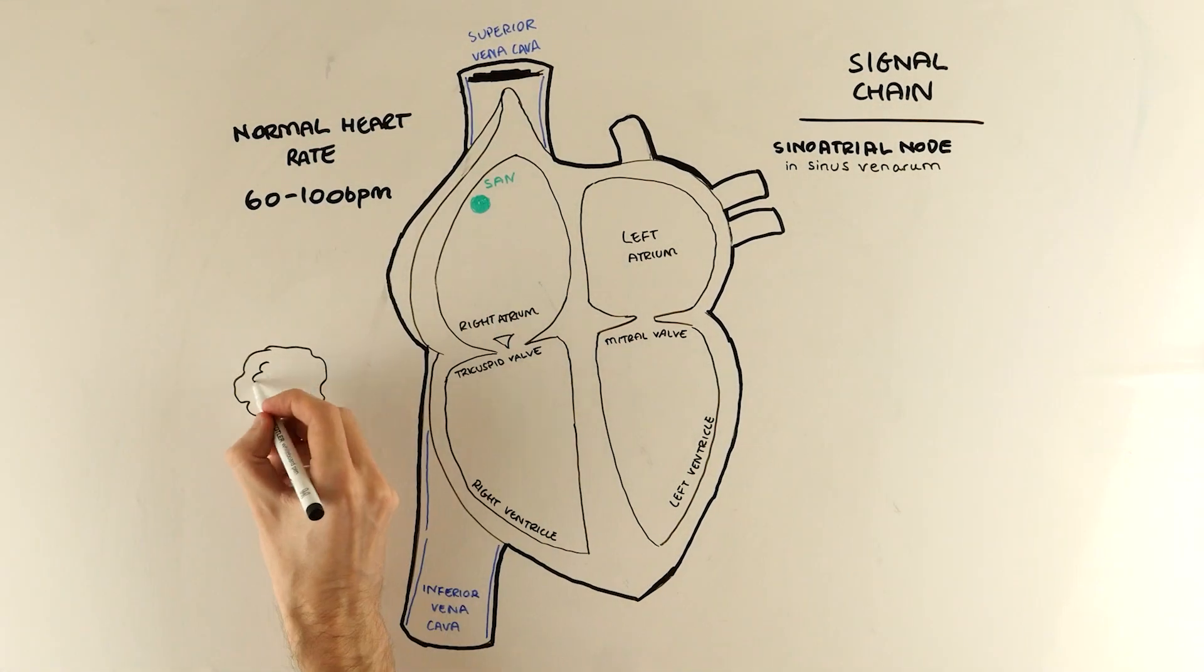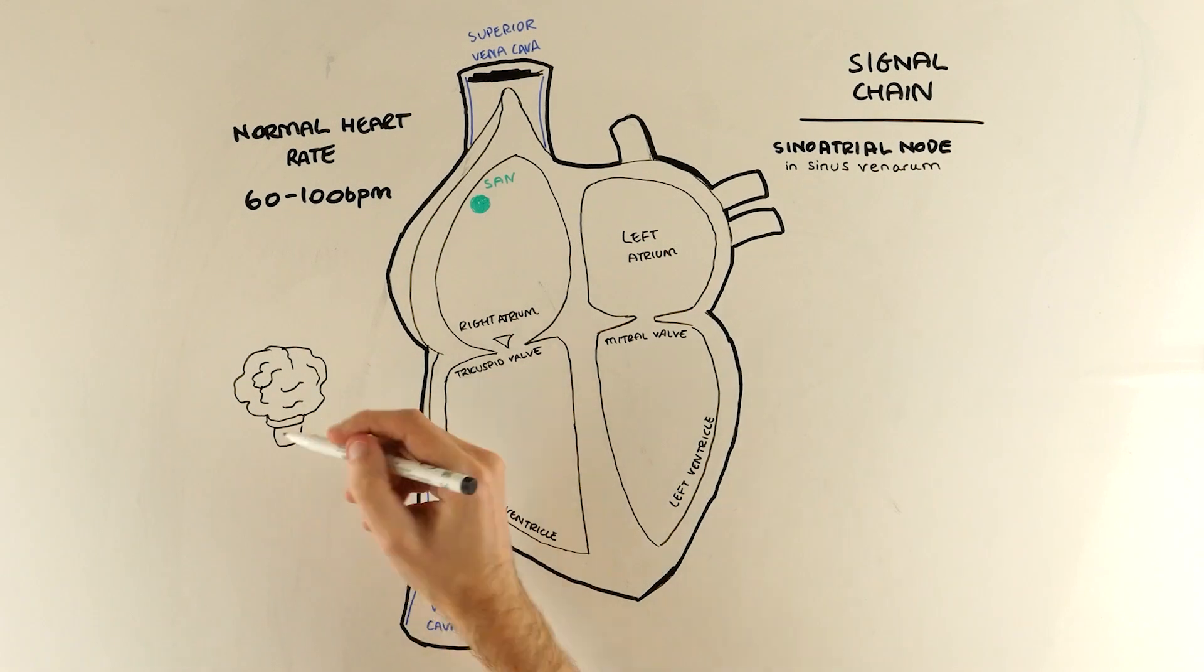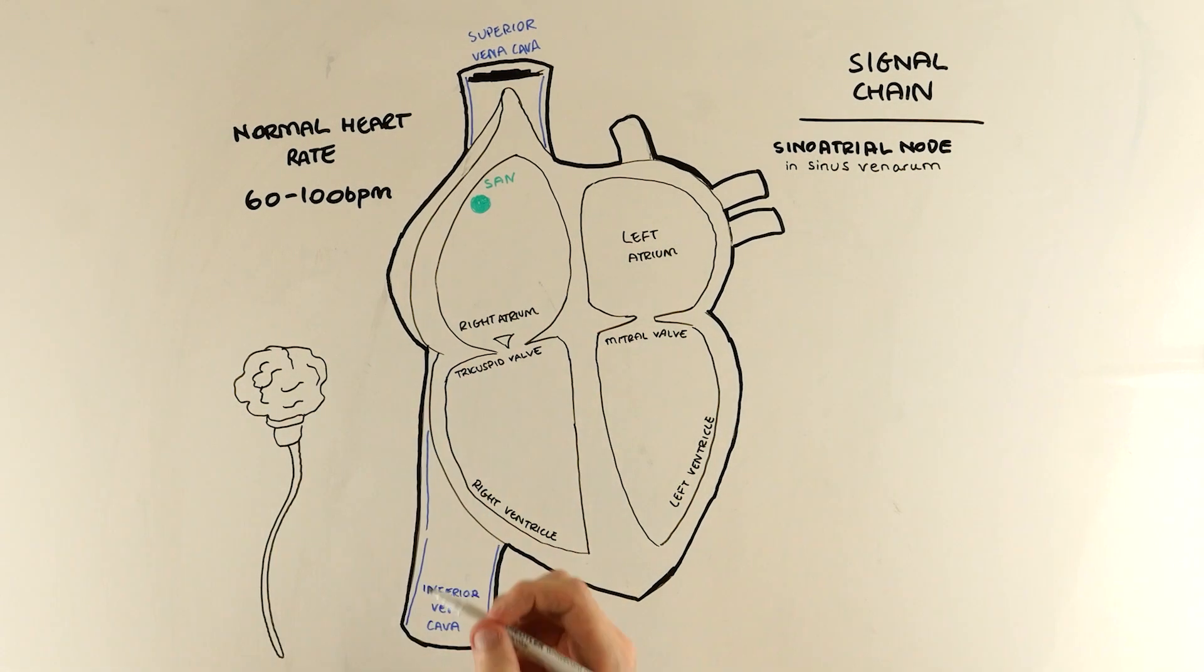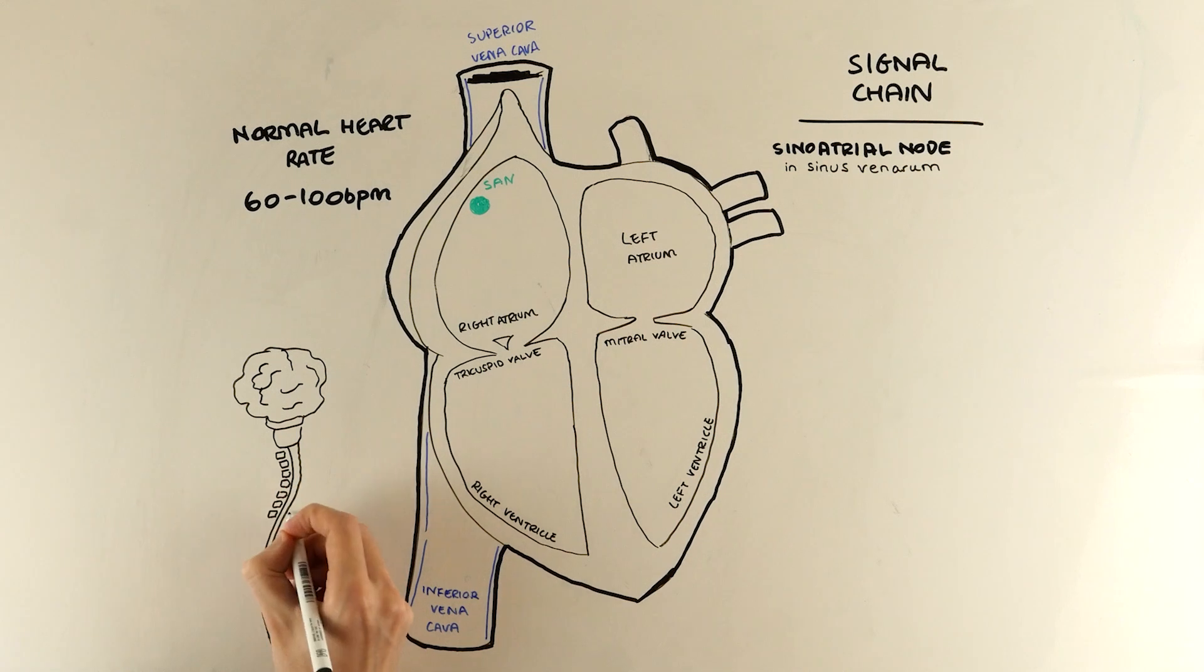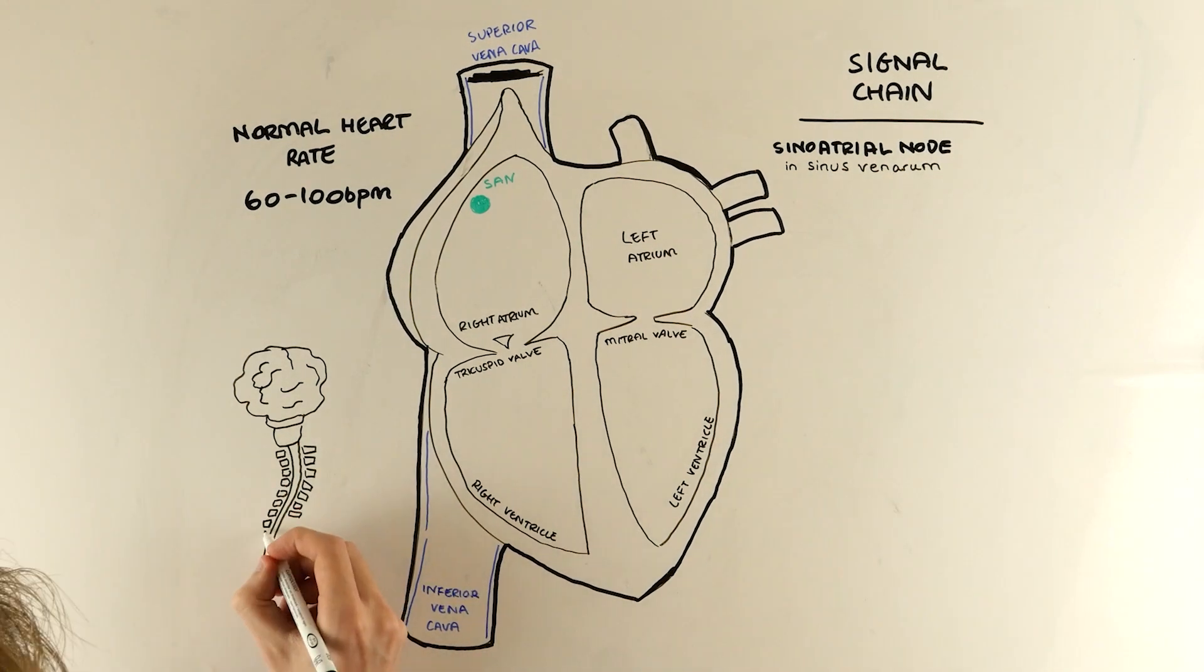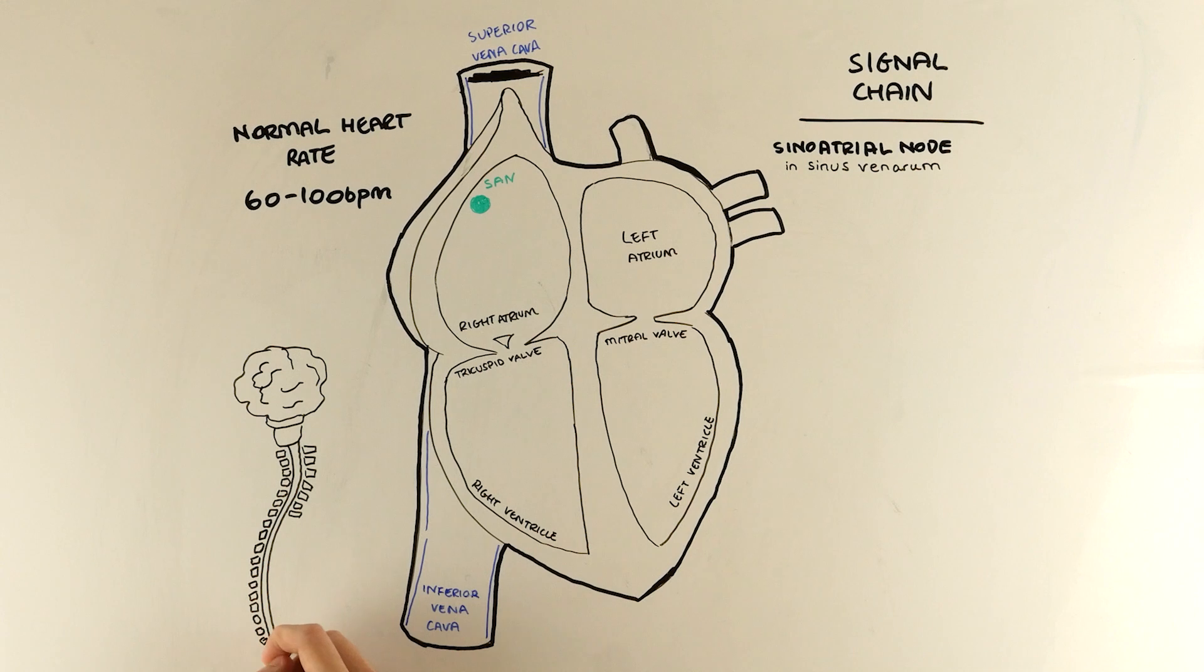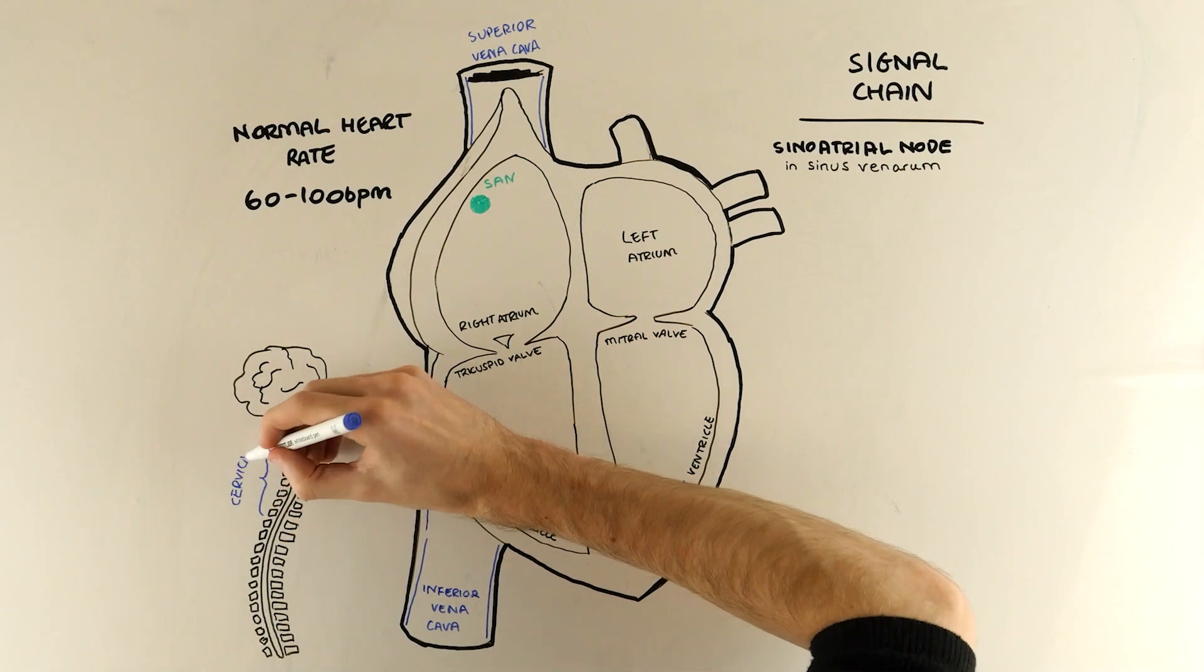But the question then becomes how does it know how fast to make our heart beat? For example, sometimes we need a faster heartbeat if we're active and exercising or maybe we're anxious and sometimes it needs to be slower if we're resting. This is controlled by the autonomic nervous system through sympathetic and parasympathetic fibers.